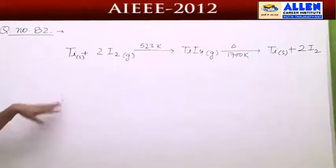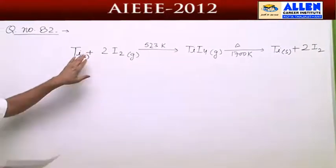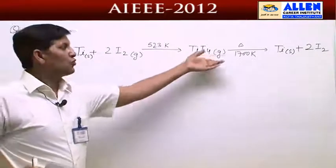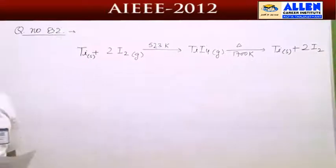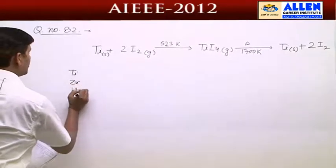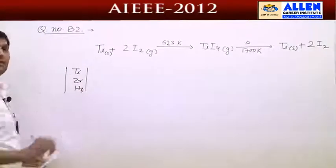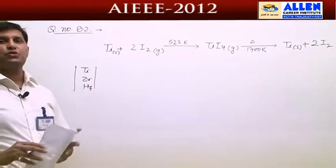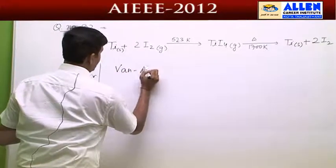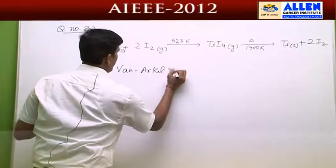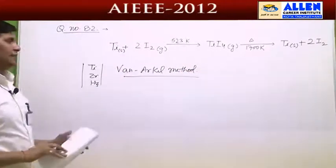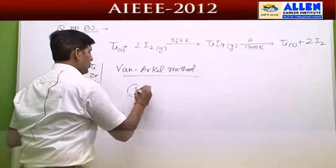Here we are observing titanium in impure form. Iodine forms titanium iodide, which is then heated again to decompose. Titanium, zirconium, and hafnium are purified using this method, known as the Van Arkel method. The correct answer is option 1.